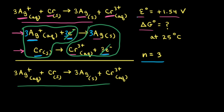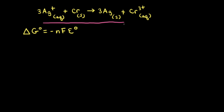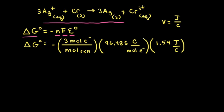Since n = 3 and the standard potential is +1.54 volts, we're ready to plug into our equation to calculate ΔG°. Using ΔG° = −nFE°, with n = 3 moles of electrons per mole of reaction, F = 96,485 coulombs per mole of electrons, and E° = 1.54 volts.